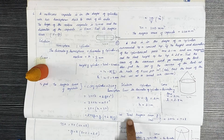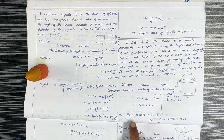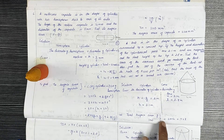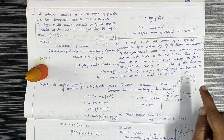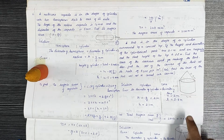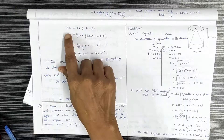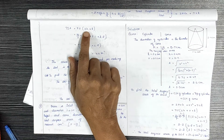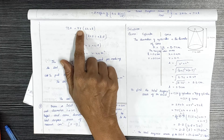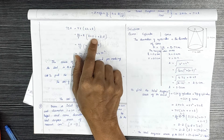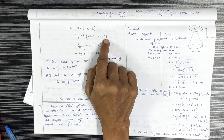To find the area of the canvas used for making the tent: total surface area equals curved surface area of the cylinder plus curved surface area of the cone, which is 2πrh + πrl. Using π = 22/7, r = 2, h = 2.1, l = 2.8.